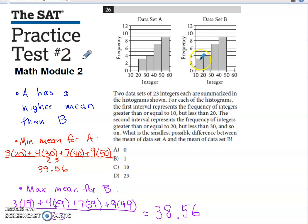So if I assume that all three of those values on that smallest stretch of the x-axis for data set B are 19s, I would have three 19s in the list. Similarly, I would have four 29s, I would have seven 39s, and I would have nine 49s.